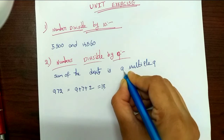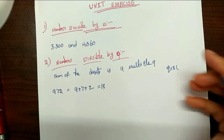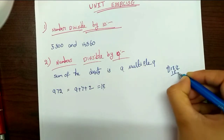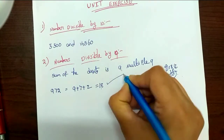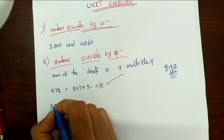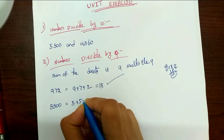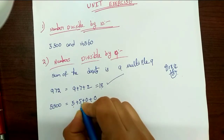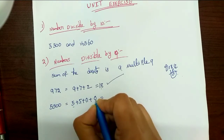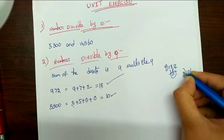Next, we check the number 5,500 for divisibility by 9. So this is the digit sum: 5 plus 5 equals 10, 10 plus 0 equals 10, 10 plus 0 equals 10. So the total is 10. Since 10 is not a multiple of 9, 5,500 is not divisible by 9.